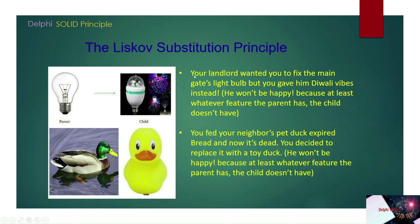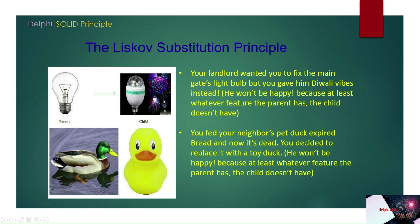To explain with an analogy: if your landlord wanted you to fix the main gate light bulb but you gave him Diwali string lights instead, he would not be happy. Because the child does not have the exact features of the parent. Your landlord is asking for a bulb to fix on the main gate, and you are giving a substitute that doesn't match all the features of the parent class — that is violating the Liskov Substitution Principle.